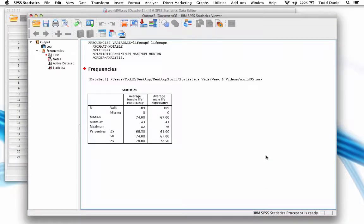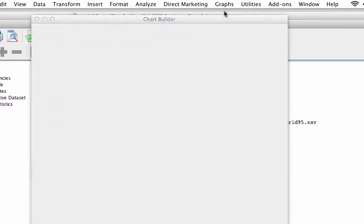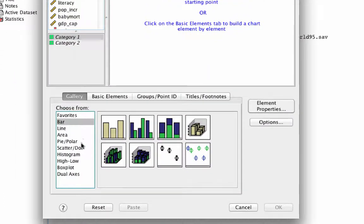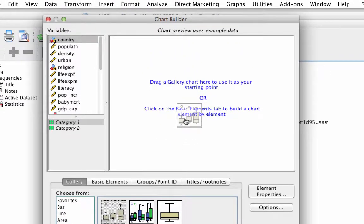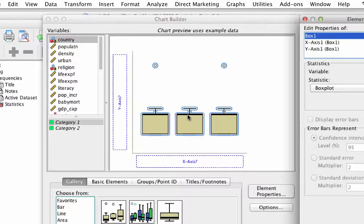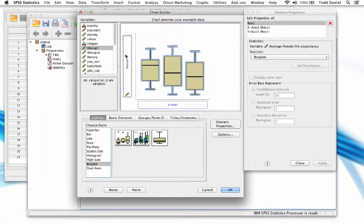Before we spend too much time with the output however, let's also create a box plot. Go to graphs, chart builder. In the gallery, choose box plot. Drag simple box plot up into the canvas. Move average female life expectancy into the y-axis drop zone and now click OK.